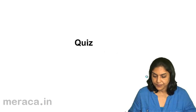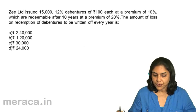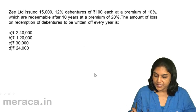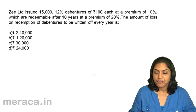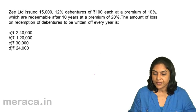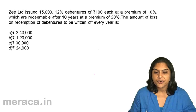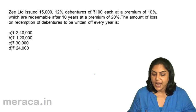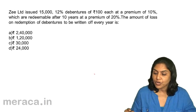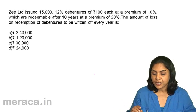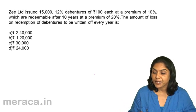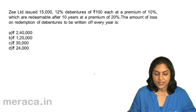Let us take a quick quiz to test our understanding so far. Z Limited issued 15,000 12% debentures of 100 each at a premium of 10%, which are redeemable after 10 years at a premium of 20%. The amount of loss on redemption of debentures to be written off every year is: